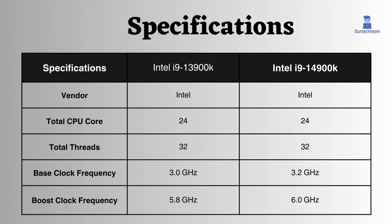Both of these processors come from Intel. They both have 24 cores and 32 threads. The Intel i9-14900K has a base clock frequency that's 200 MHz higher than the Intel i9-13900K.